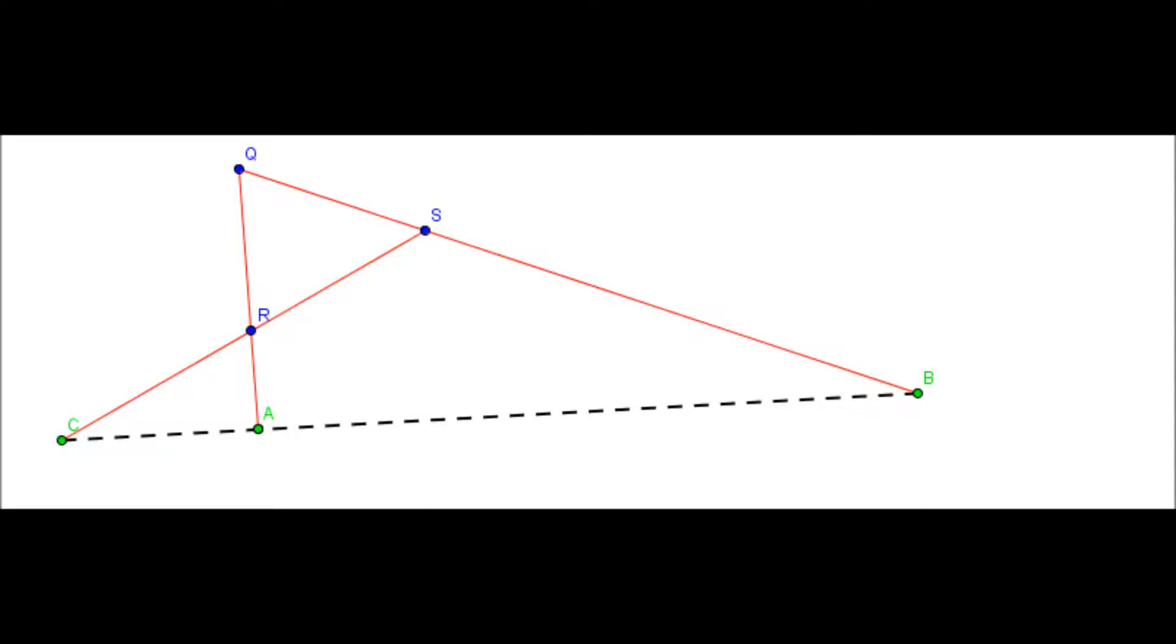And these four green points on this dotted line form a harmonic set by the definition.